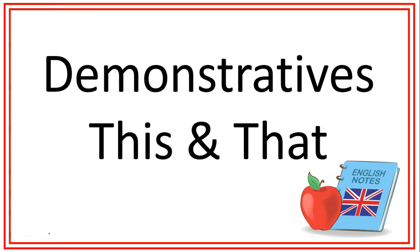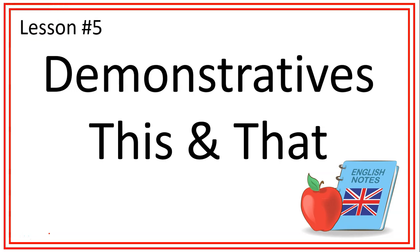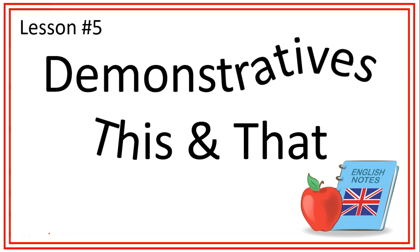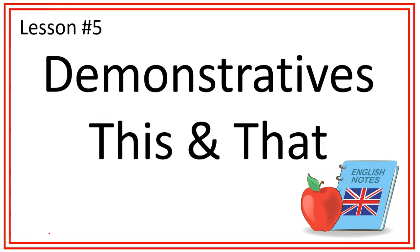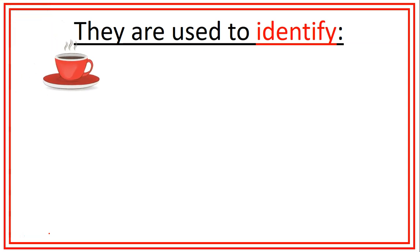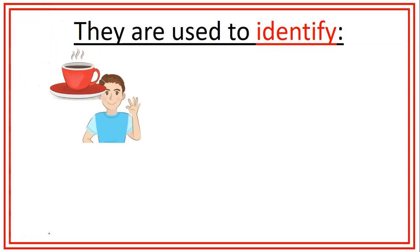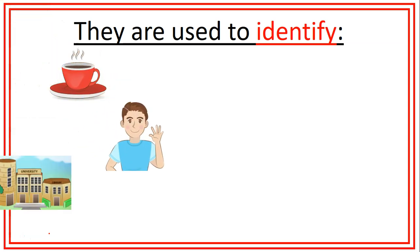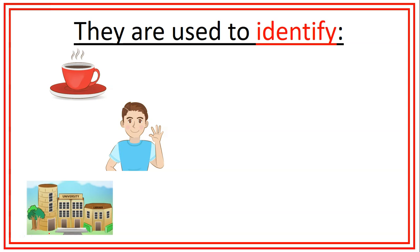Hello, guys! Welcome back to English Notes by EJ. Today we will check lesson 5, demonstratives this and that. So, let's get started. We use the demonstratives this and that to identify objects, people, and places.